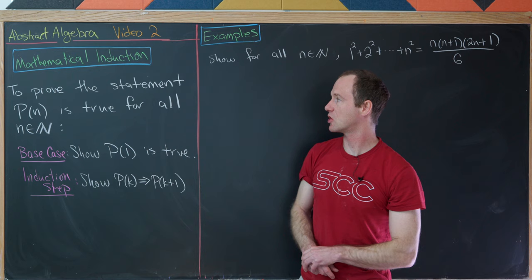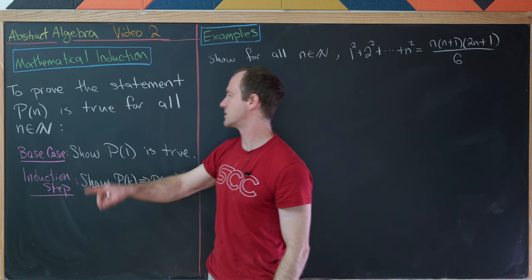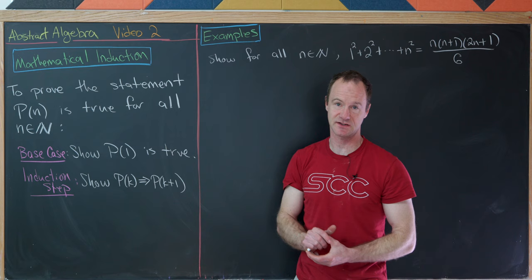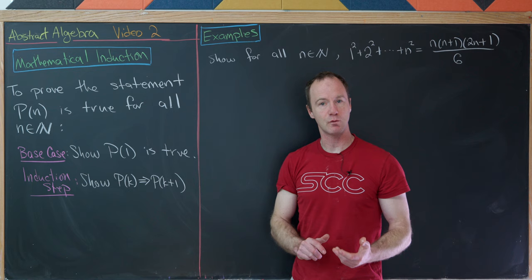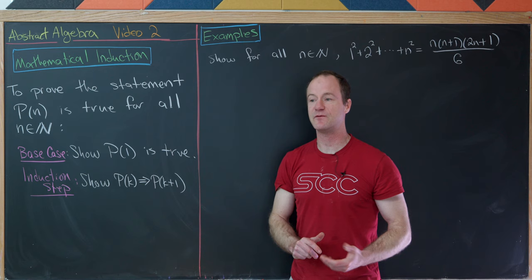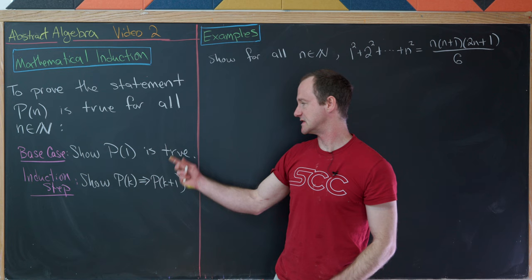Let's start with the principle of mathematical induction. Our goal is to prove that the statement P(N) is true for all natural numbers N. This is a family of mathematical statements indexed by natural numbers. Our strategy will start with a base case: show that P(1) is true. Then we follow that up with an induction step — to show that P(K) implies P(K+1). In other words, if P(K) is true, then P(K+1) is true.